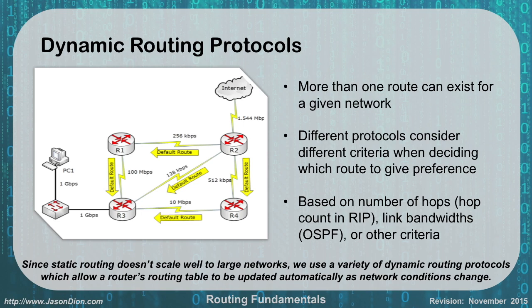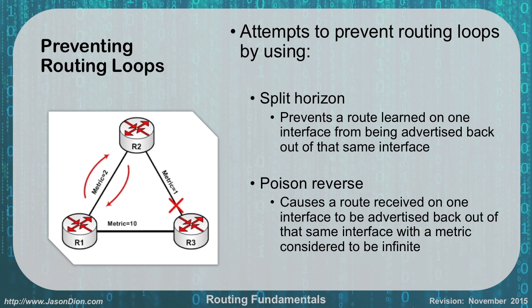One other thing we have to worry about is routing loops. Just like spanning tree protocol prevents loops for switches, we need to prevent routing loops. In this diagram, routers 1, 2, and 3 are all connected together, and could easily create a routing loop where they're all sending information to each other. To prevent that, we can use either split horizon or poison reverse.